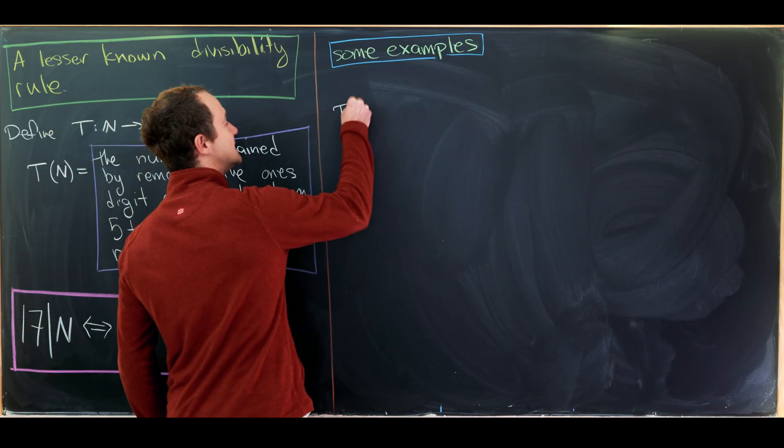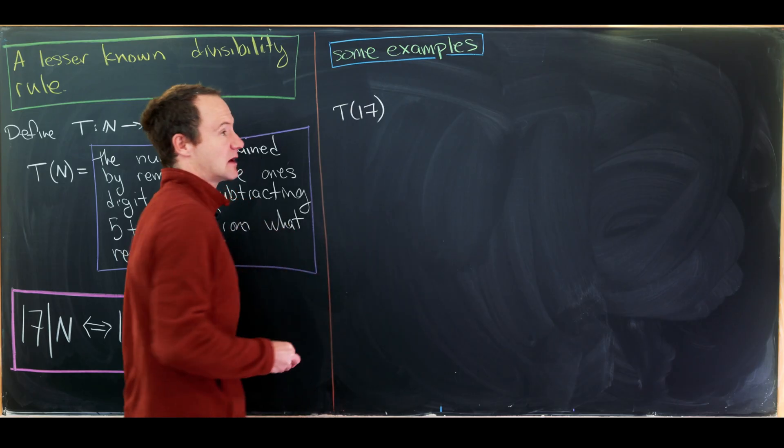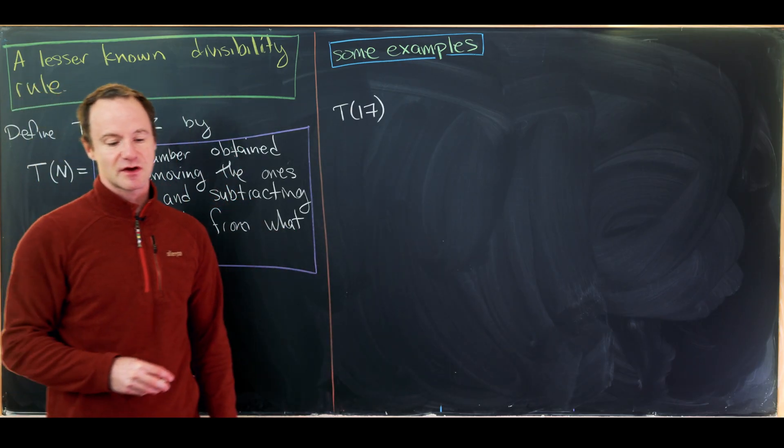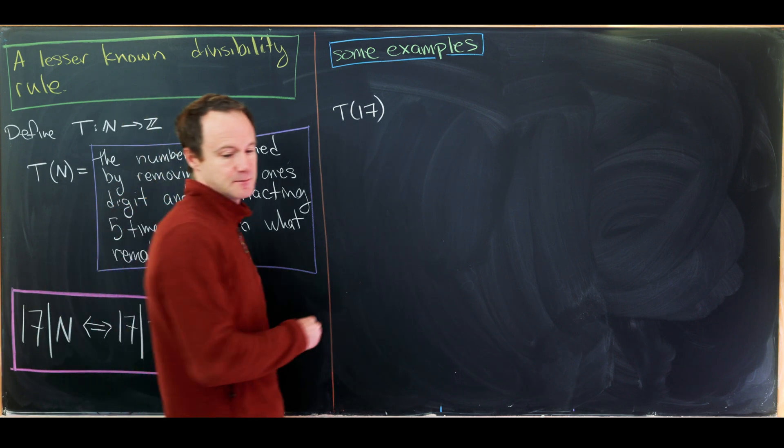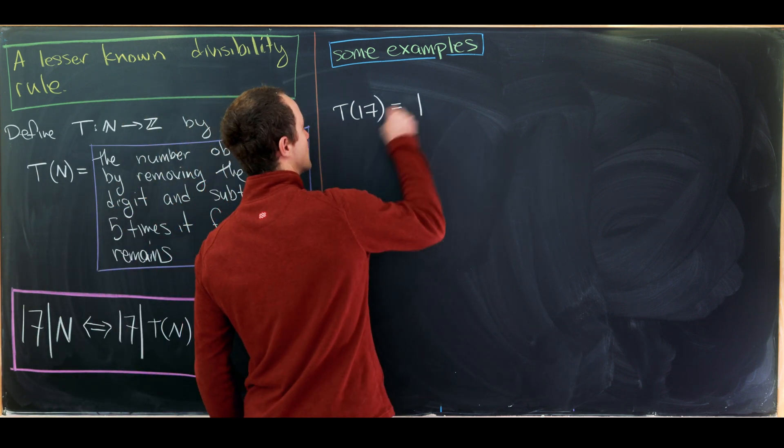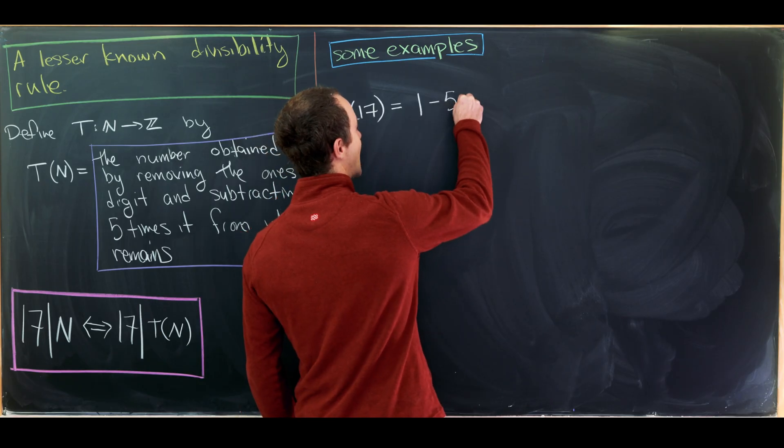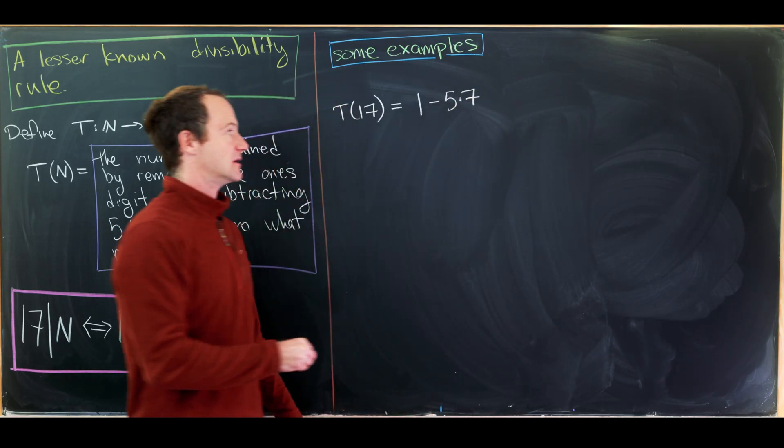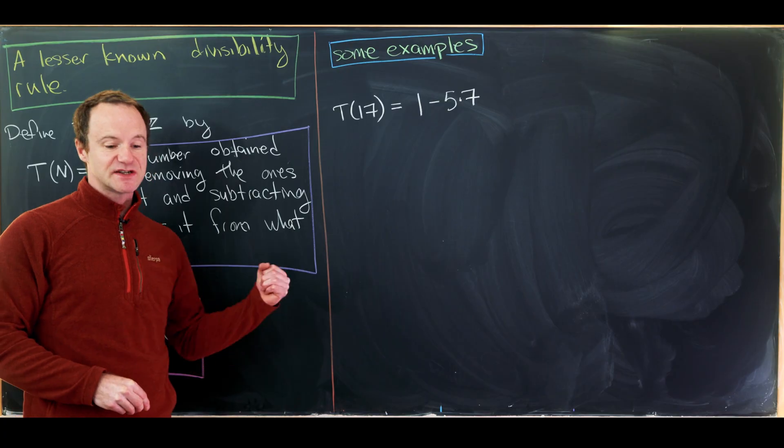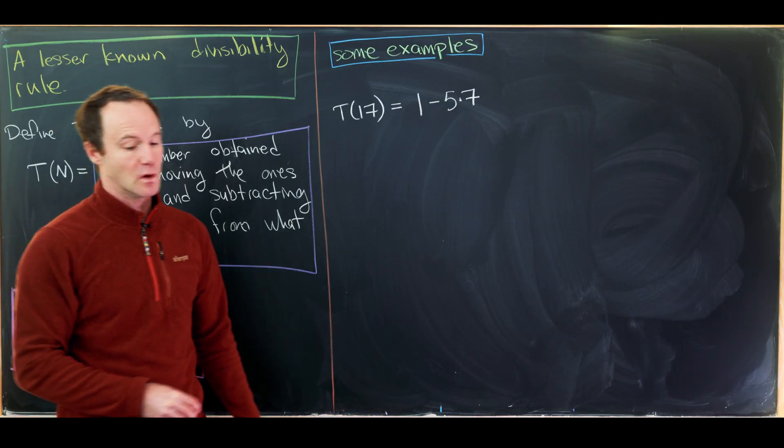So let's do T(17). Well, 17 is most definitely divisible by 17, so I think this is a good place to start. So we'll remove 7, leaving us with 1, and then we'll subtract 5 times 7. So remove the ones digit, subtract 5 times the ones digit.